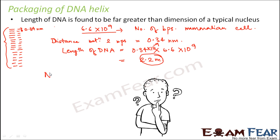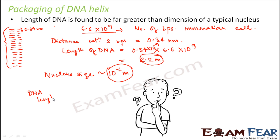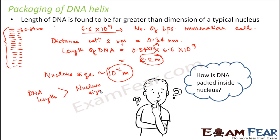Now what is the size of the nucleus? Normally the size of the nucleus is of the order of 10⁻⁶ meters. So there is a huge difference — DNA is 2.2 meters and nucleus size is 10⁻⁶ meters. DNA length is not only large but very large when compared to the size of the nucleus. But we say that DNA is located inside the nucleus, so how is the DNA packed inside? Understanding how the DNA helix is packaged becomes very, very important.